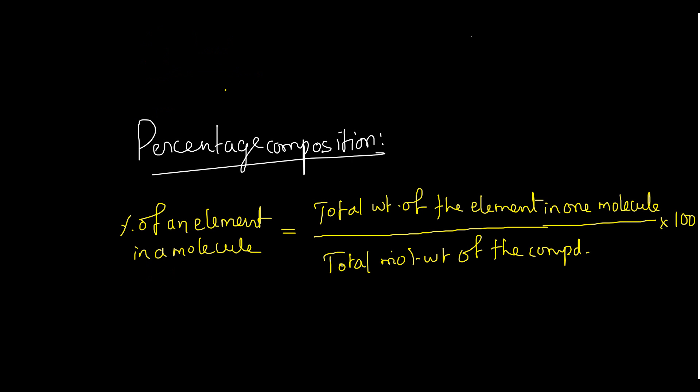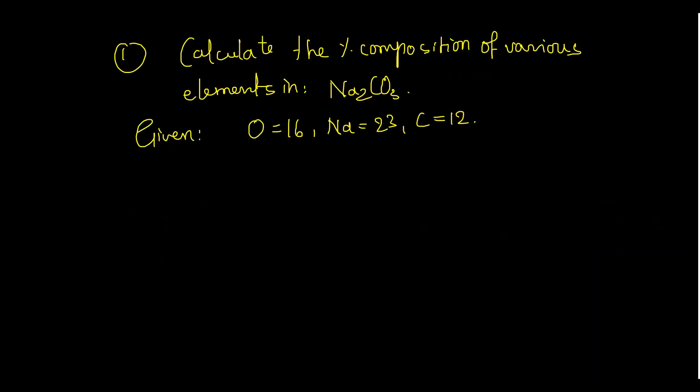Starting with percentage composition — write the formula straight away. Percentage composition tells us about, if you take any compound say copper sulfate, how much percent of copper is there, how much percent of sulfur is there, how much percent of oxygen is there. The formula is: percentage of an element in a molecule equals total weight of the element in one molecule divided by total molecular weight of the compound, multiplied by 100.